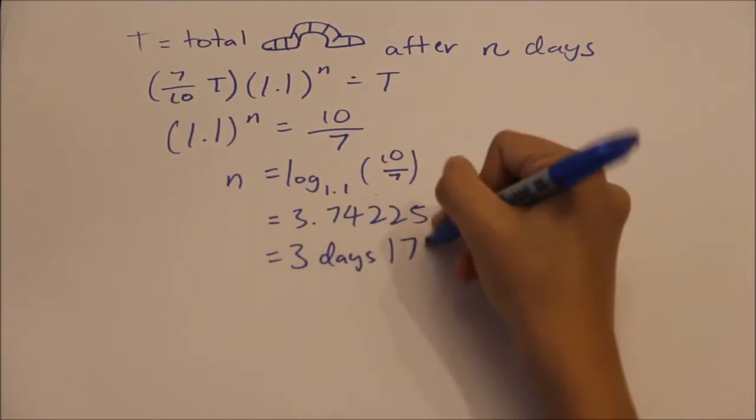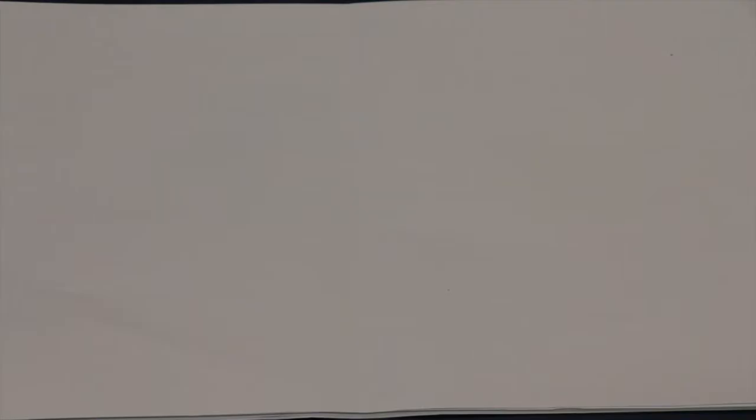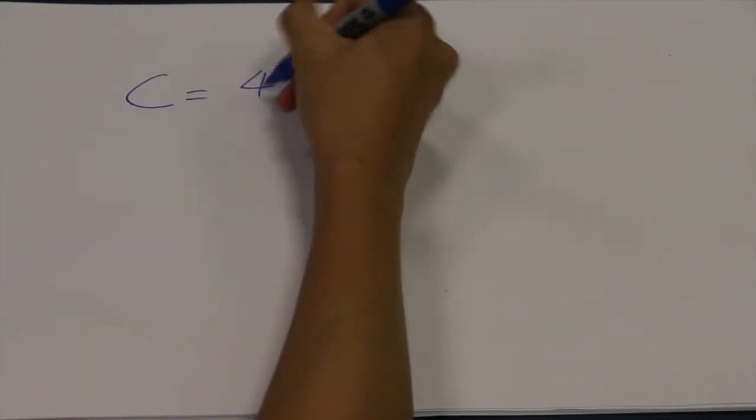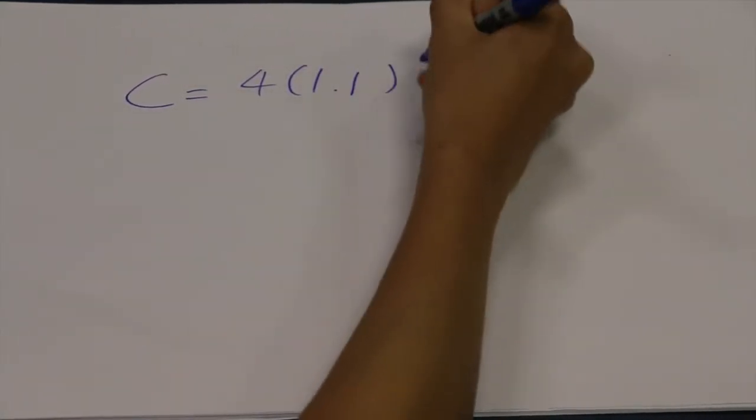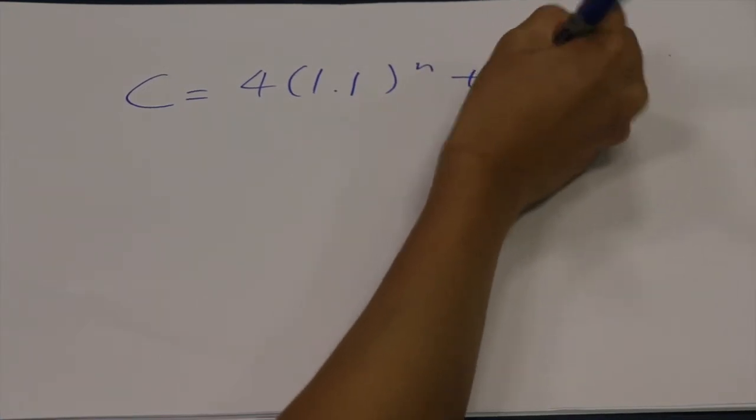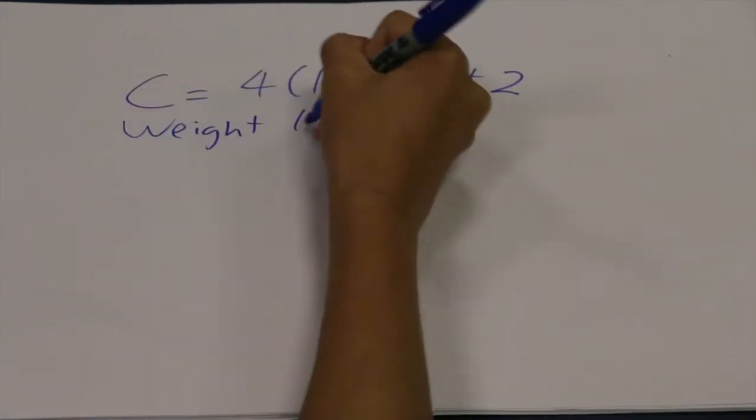Let c be the number of worms after n days, and y be the total weight loss. c equals 4 times 1.1 to the power of n plus 2. The total weight loss in the 15.781 day is equals to 0.22 times...